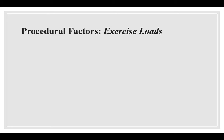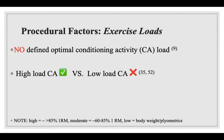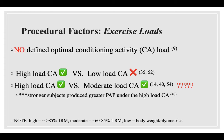In terms of exercise loads, we're primarily concerned with the first exercise load — the conditioning activity. It's theorized this should be performed at a high load, but research has remained mixed on whether that is true, and researchers have yet to define an optimal load for maximizing results. When studies compared a high versus low load conditioning activity, the current theory of needing a high load withstood. However, when studies observed a high versus moderate load, the results were not as conclusive. Some studies found that a moderate load at slightly higher reps and/or more sets could produce just as well, if not a better response, than the high load conditioning activity.